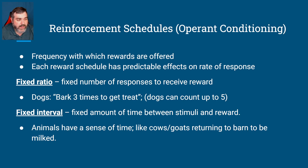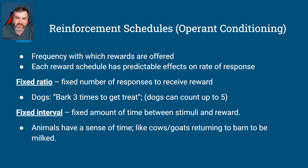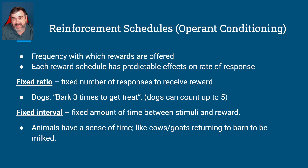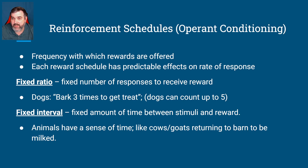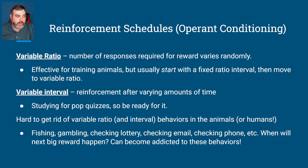Fixed intervals involve a fixed amount of time between the stimulus and the reward. Animals do have a sense of time. This is kind of like how cows or goats return to the barn to be milked. If they get full at the same time every day, that has something to do with it too. Chickens automatically go back to the coop at the end of the day — they know that's a place of safety. Animals also have a circadian clock and an idea of what's going on during the day.